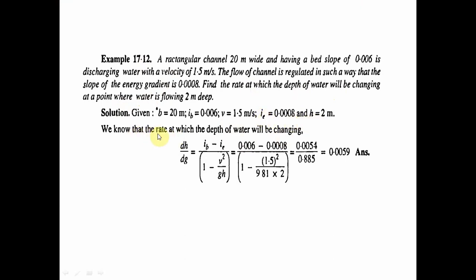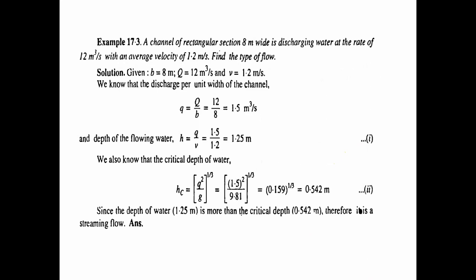We know that the rate at which the depth of water will be changing is dh/dc = (ib - ie) / (1 - V²/gh). That equals (0.006 - 0.0008) divided by (1 minus 1.5 squared divided by 9.81 into 2), which equals 0.005 divided by 0.885, giving 0.005 as the answer.